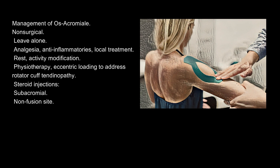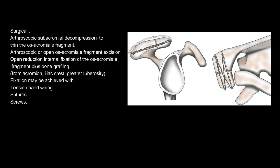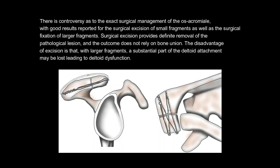Surgical management options include: arthroscopic subacromial decompression to thin the os acromiale fragment; arthroscopic or open os acromiale fragment excision; and open reduction internal fixation of the os acromiale fragment with bone grafting from the acromion, iliac crest, or greater tuberosity. Fixation may be achieved with tension band wiring, sutures, or screws. There is controversy regarding the exact surgical management, with good results reported for excision of small fragments and fixation of larger fragments.